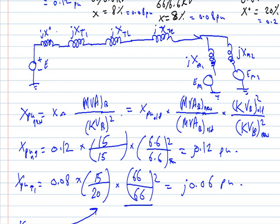So the generator's new per-unit value is the same as the old one: 0.12. The transformer per-unit reactance is j0.06, the transmission line is j0.207, and the motors are all 0.5 per unit each. This completes the reactance diagram for this example.